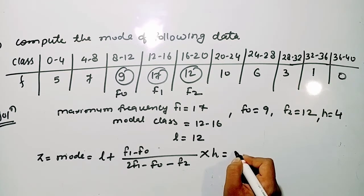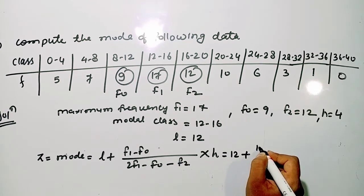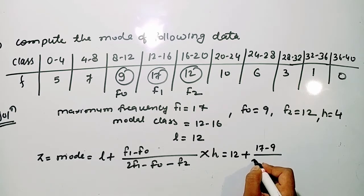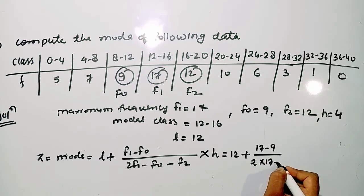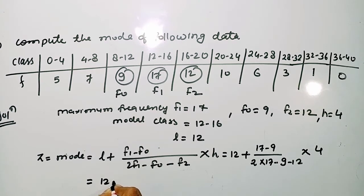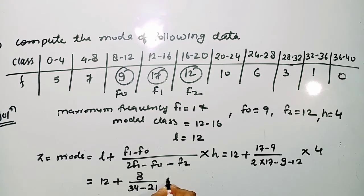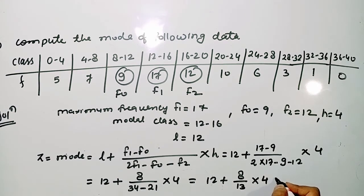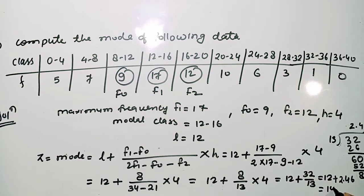Applying the formula: Mode = L + [(F1 − F0) / (2F1 − F0 − F2)] × H = 12 + [(17 − 9) / (2×17 − 9 − 12)] × 4 = 12 + [8 / (34 − 21)] × 4 = 12 + [8 / 13] × 4 = 12 + 32/13 = 12 + 2.46 = 14.46. So the mode of the given observation is 14.46.